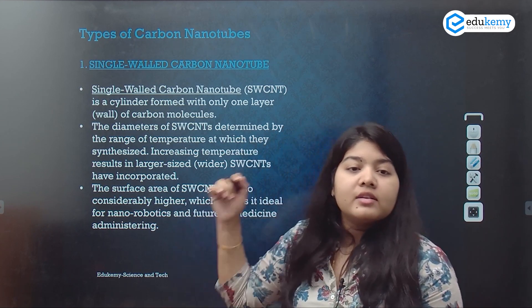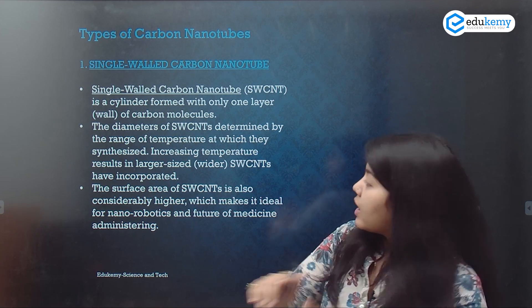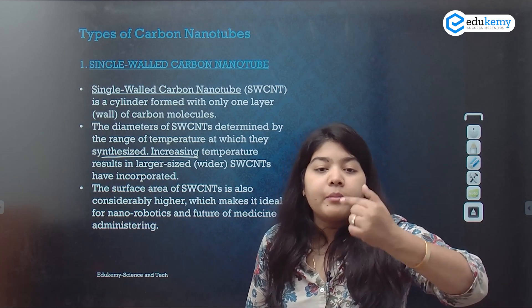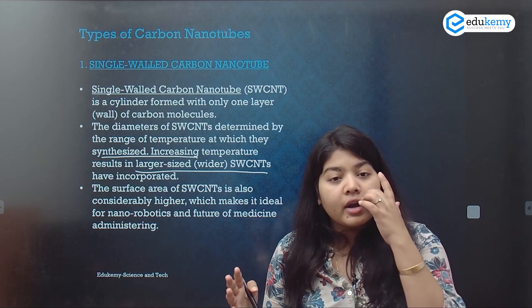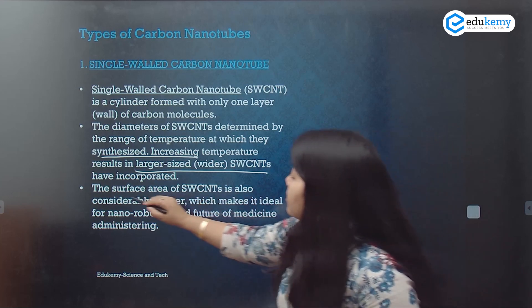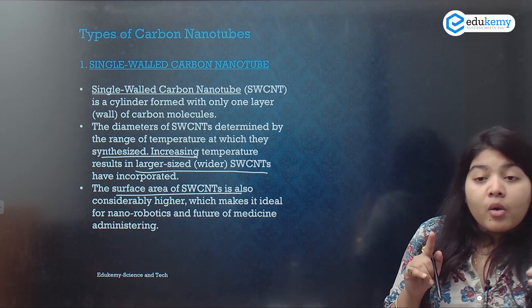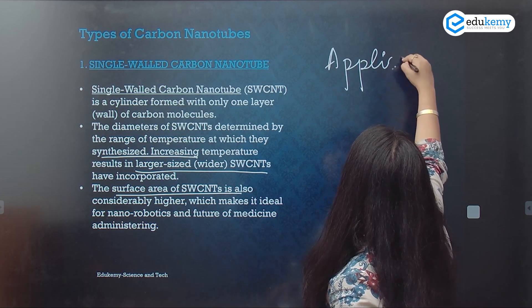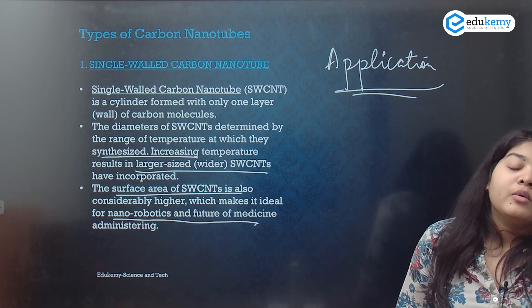Single-walled carbon nanotubes have only one layer. Their diameters are determined by the range of temperature at which they are synthesized — increasing temperature results in larger and wider single-walled carbon nanotubes. Their surface area is also considerably higher, making them ideal for nano robotics and medicine administration.